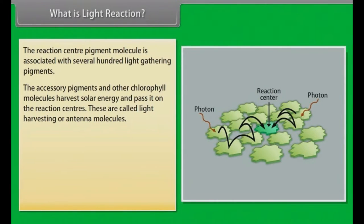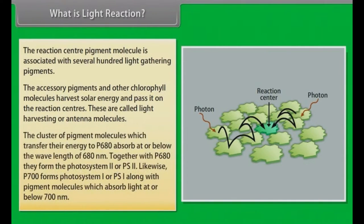These are called light harvesting or antenna molecules. The cluster of pigment molecules which transfer their energy to P680 absorb at or below the wavelength of 680 nm. Together with P680, they form photosystem 2 or PS2. Likewise, P700 forms photosystem 1 or PS1 along with pigment molecules which absorb light at or below 700 nm.